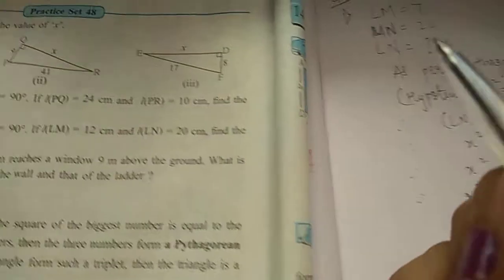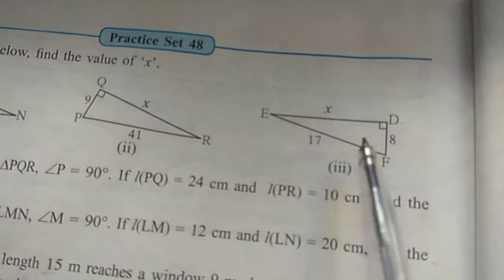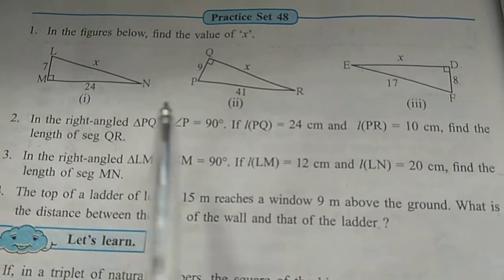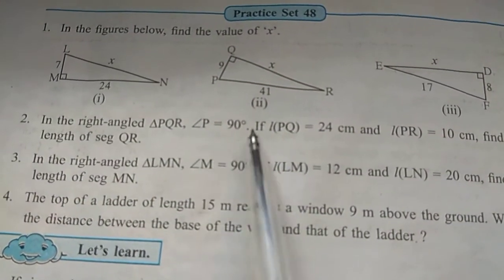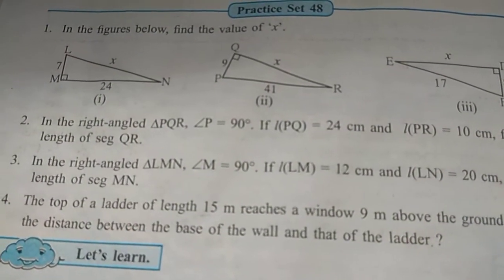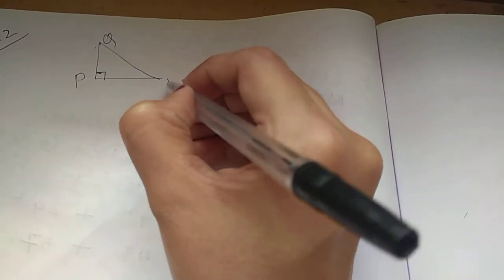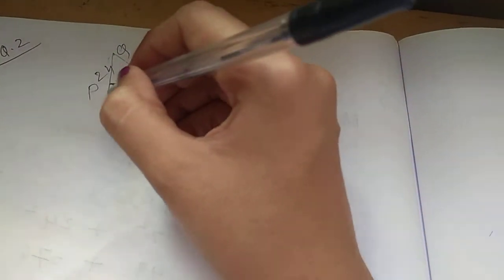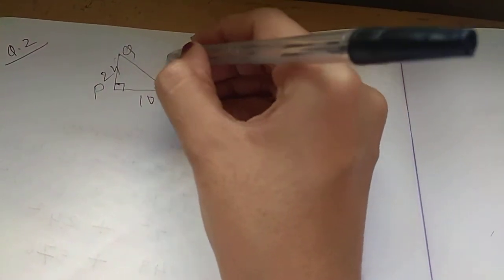Sum number 3 is for homework. Coming on to main question number 2: find, in the right angle triangle PQR where angle P is 90 degrees, if PQ is 24 and PR is 10, find the length of segment QR. This means we have to find the hypotenuse only.